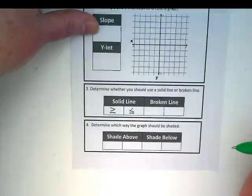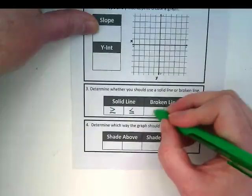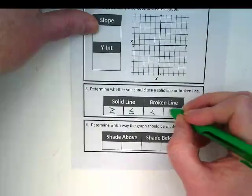Broken line, what do you guys predict? Just less than or just greater than?